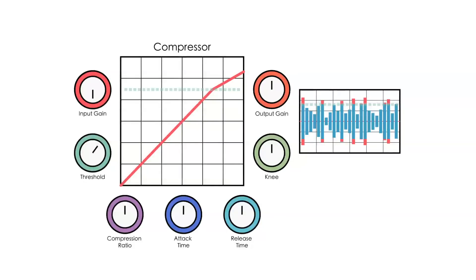Next we can fine-tune this threshold with the knee. The softer the knee the more gradual the transition from compressed to uncompressed. The harder the knee the harsher the transition.